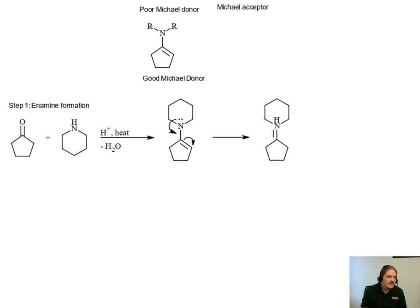And so now we've got a molecule with charge separation, but it's got a negative charge on the carbon atom where we need it to be a nucleophile, right? And so this now gives us what we need to be our Michael donor.